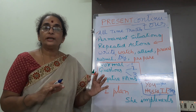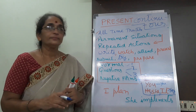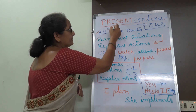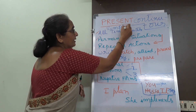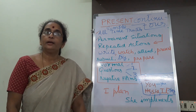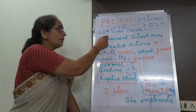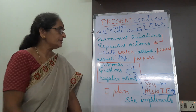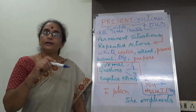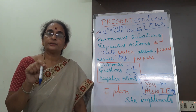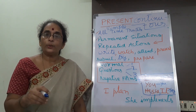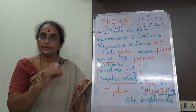So students, in this class we learnt two tenses. The first is present simple tense. The second is present continuous tense. In simple tense, we talk about regular happenings, universal truths, permanent situations, and repeated actions. In continuous tense, the continuing actions — as now, at present, just now — the actions that are happening and going on.